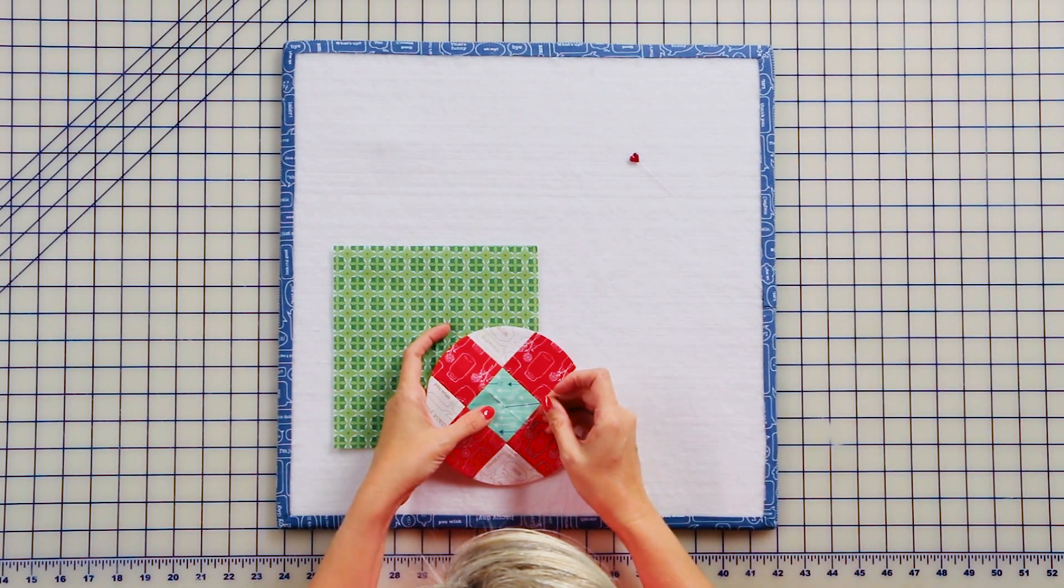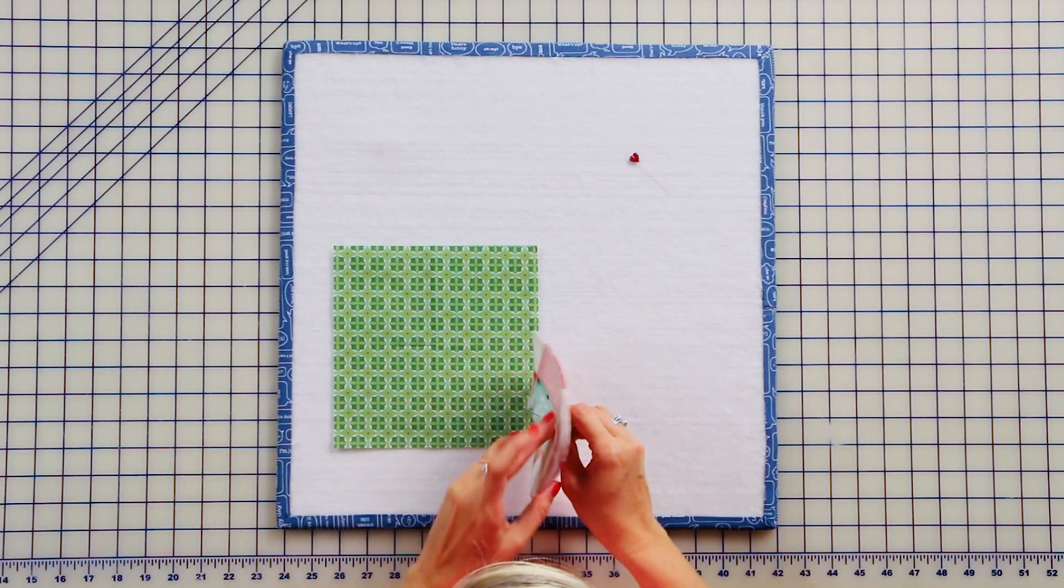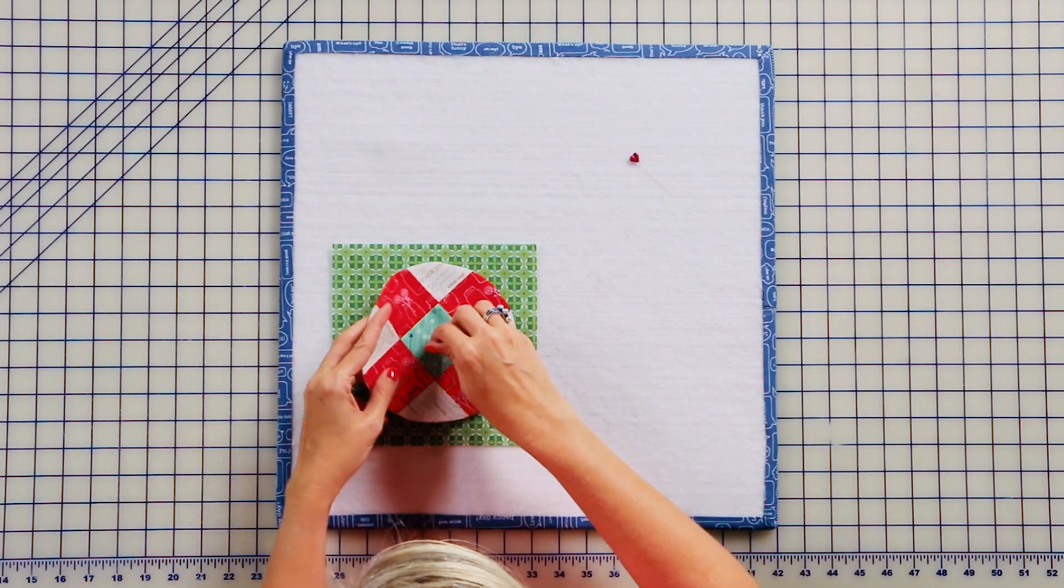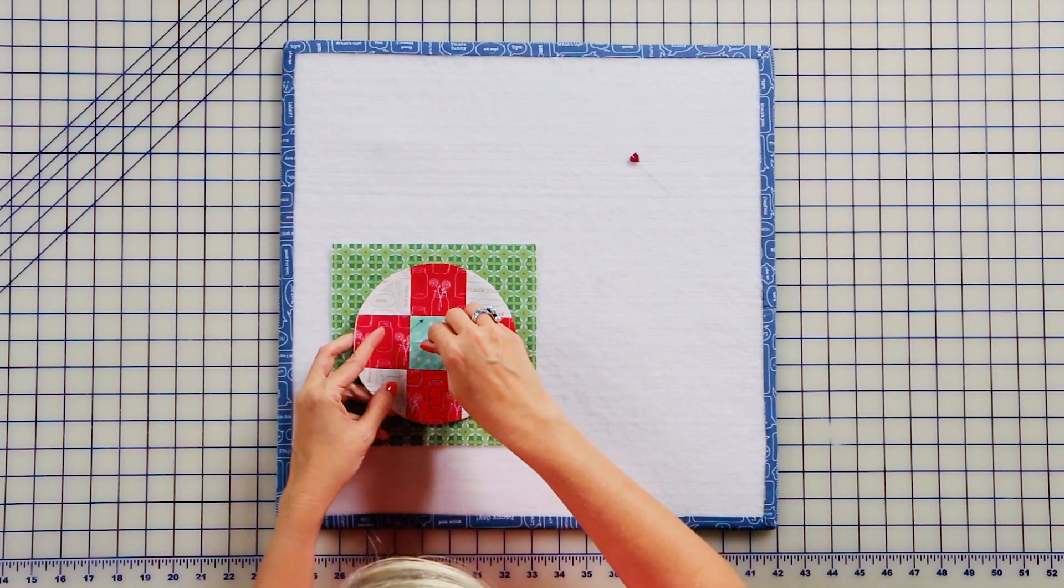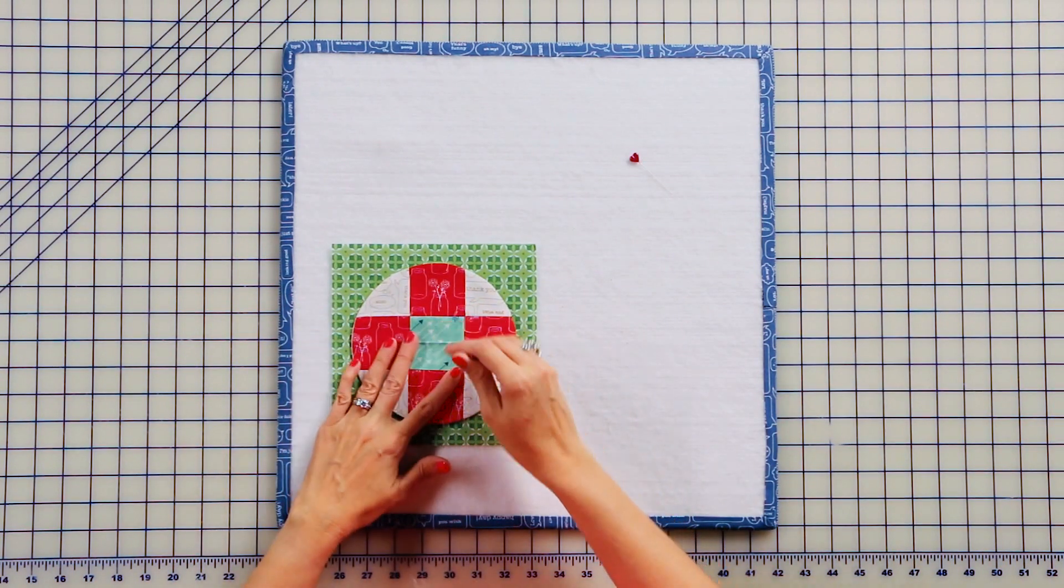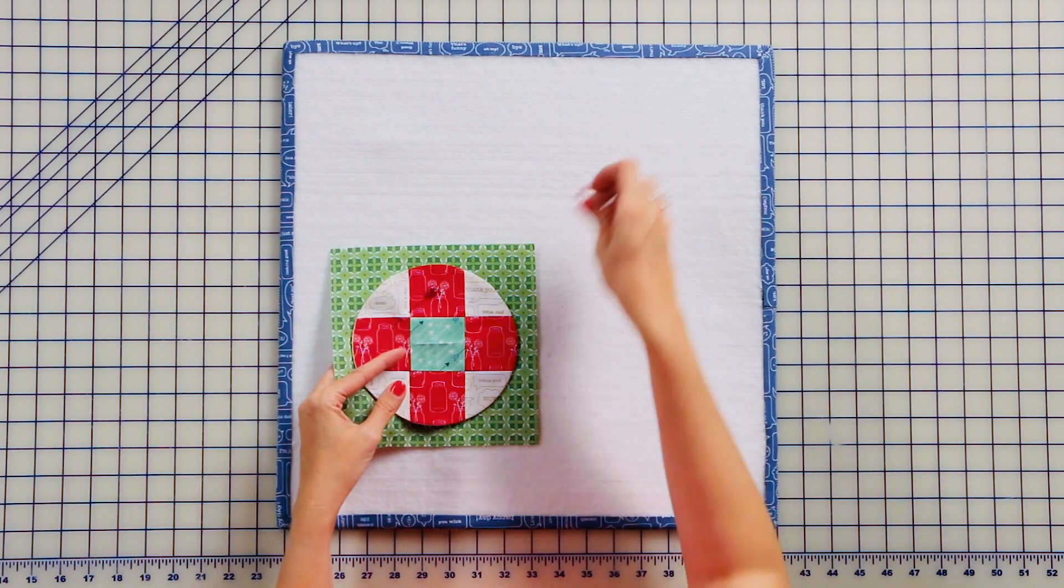You're going to take your center, match it to the center of your square, pin in place, and now let's applique this down.